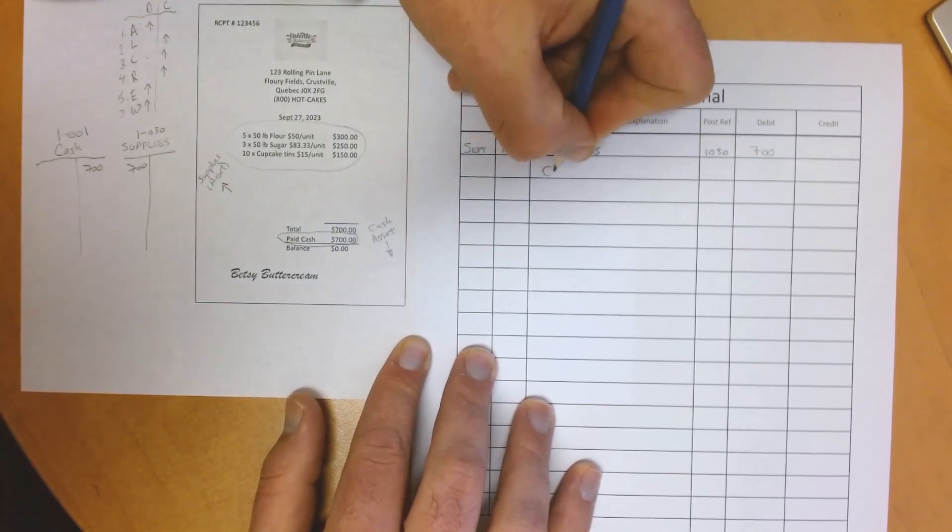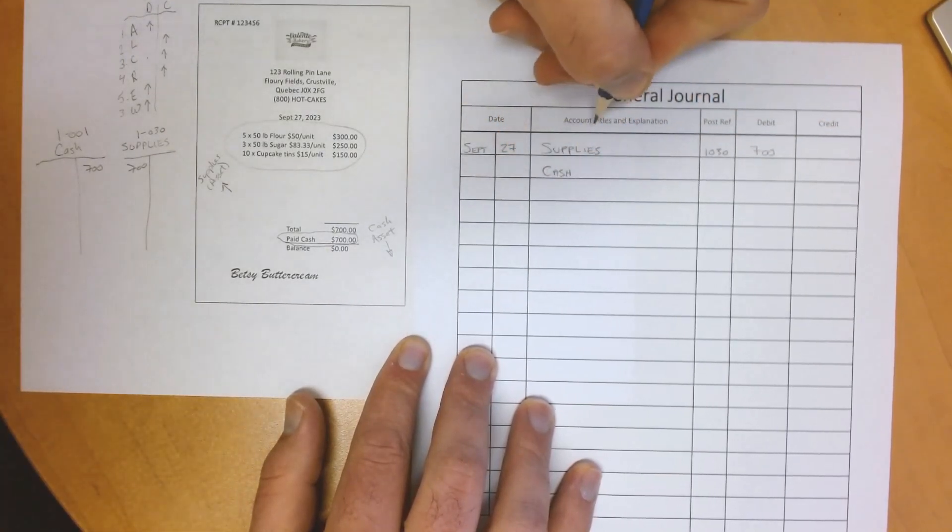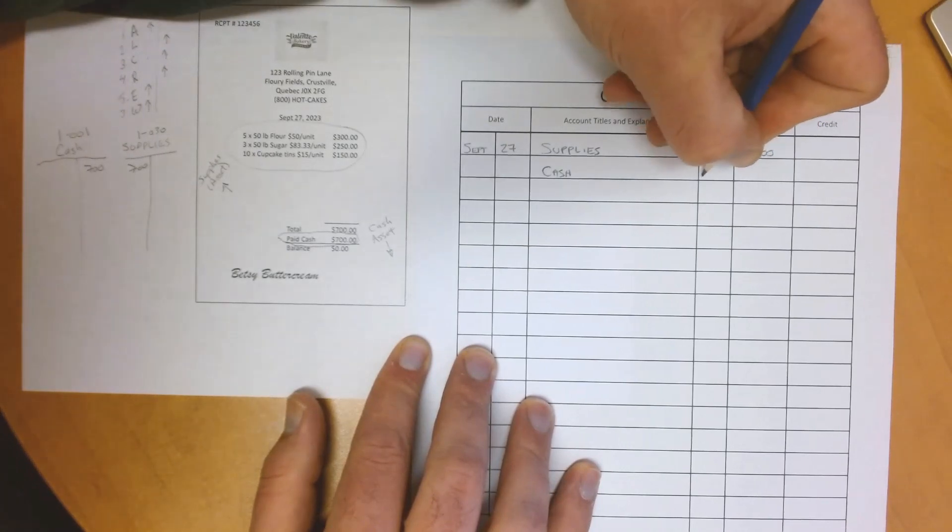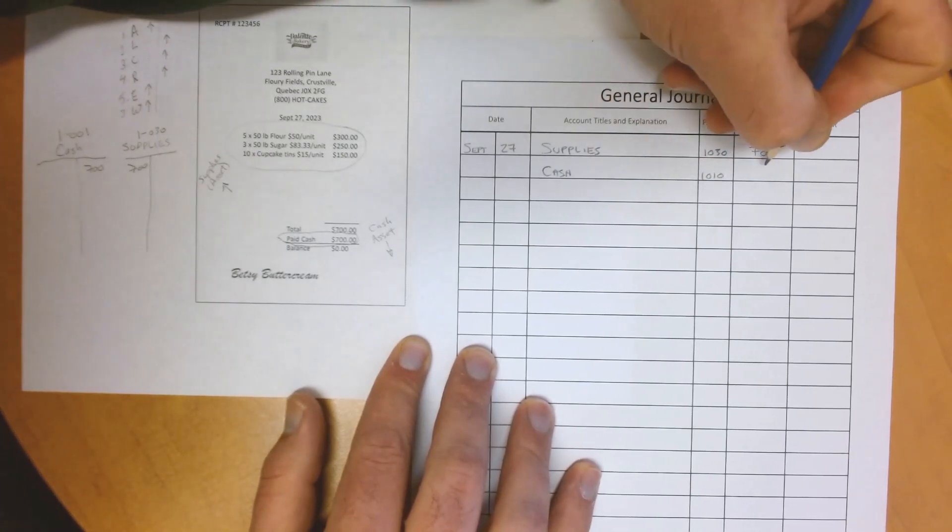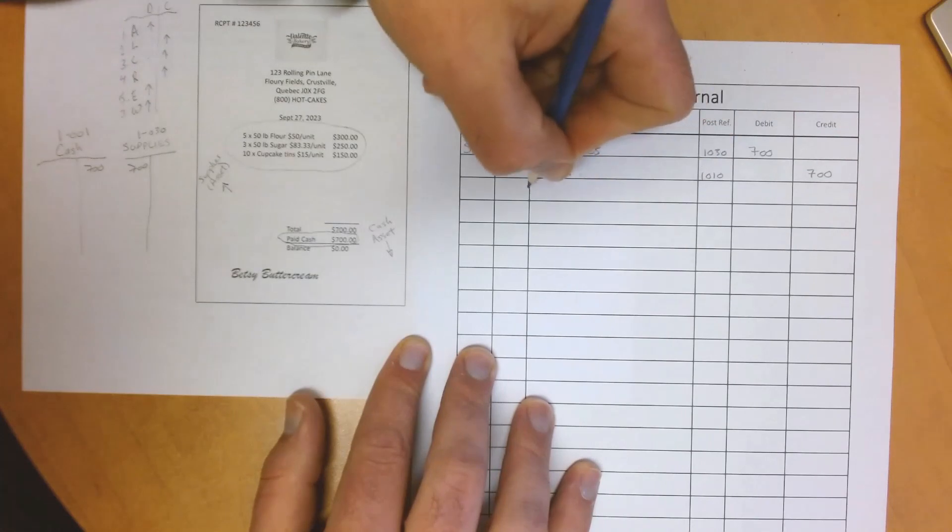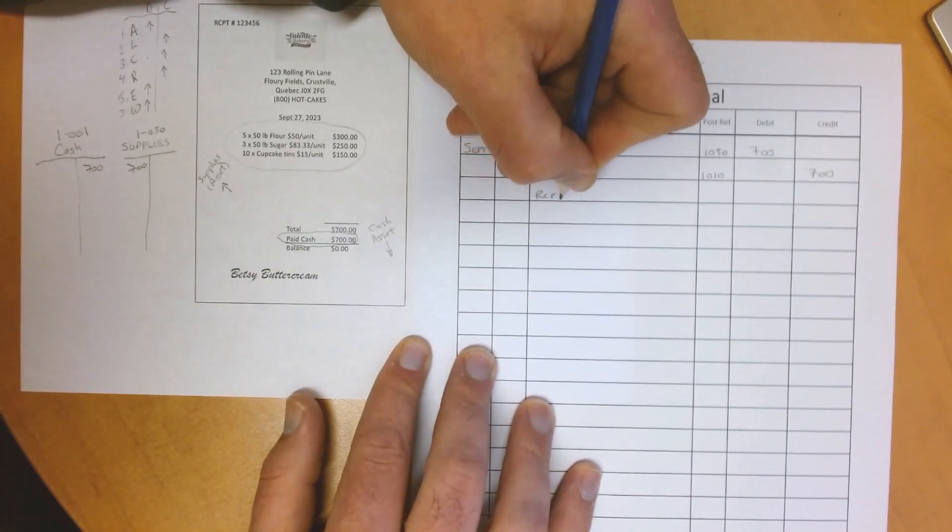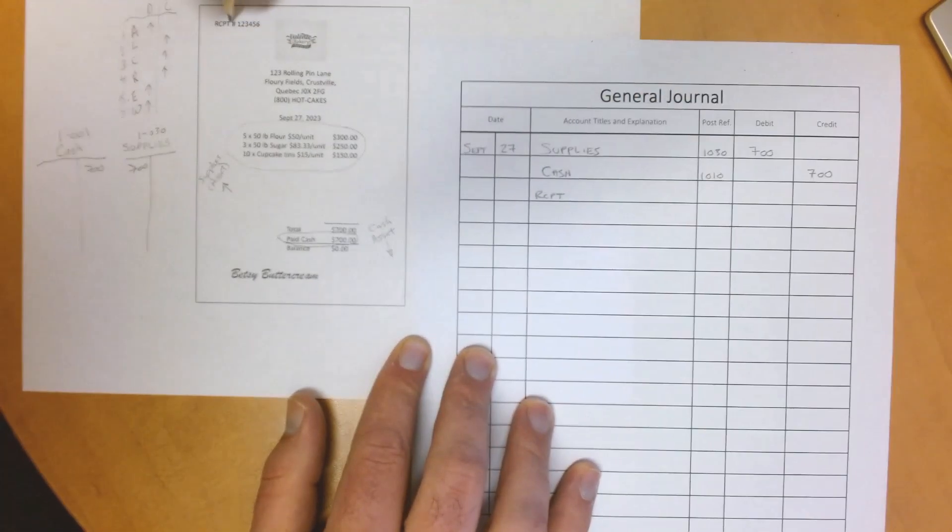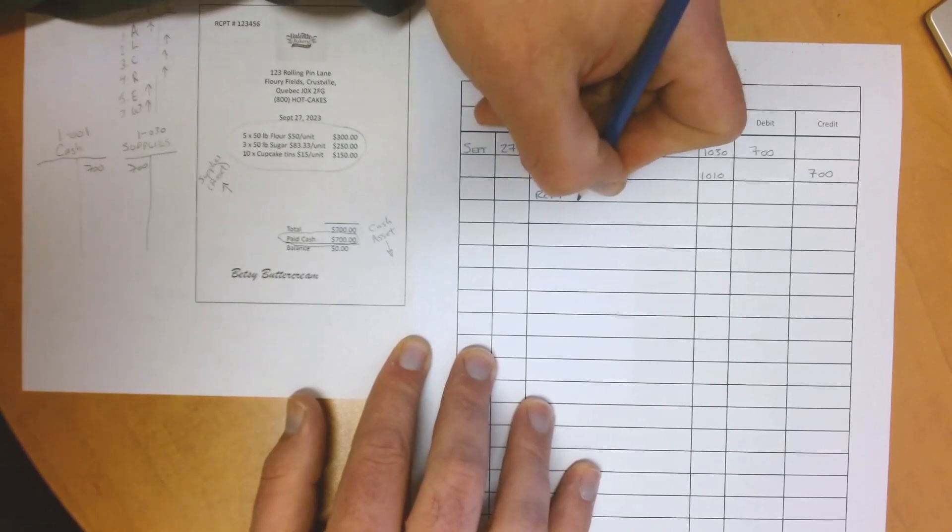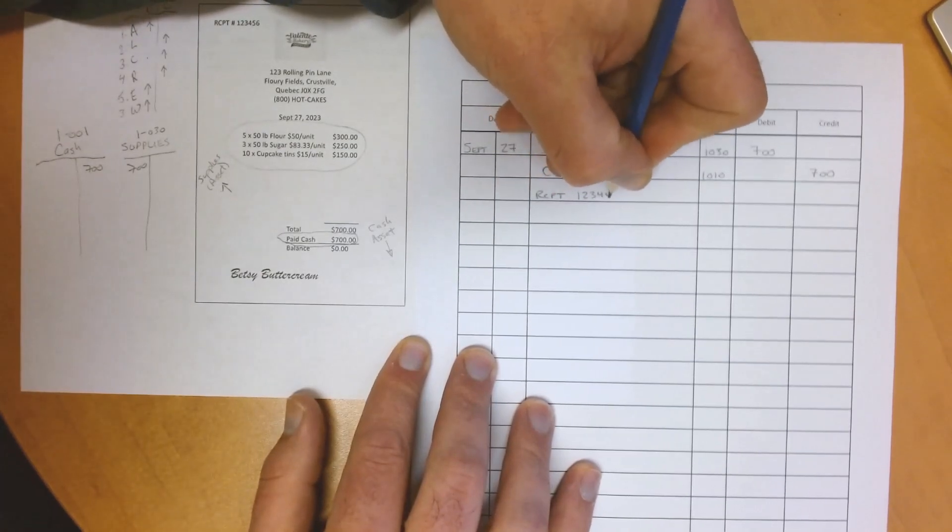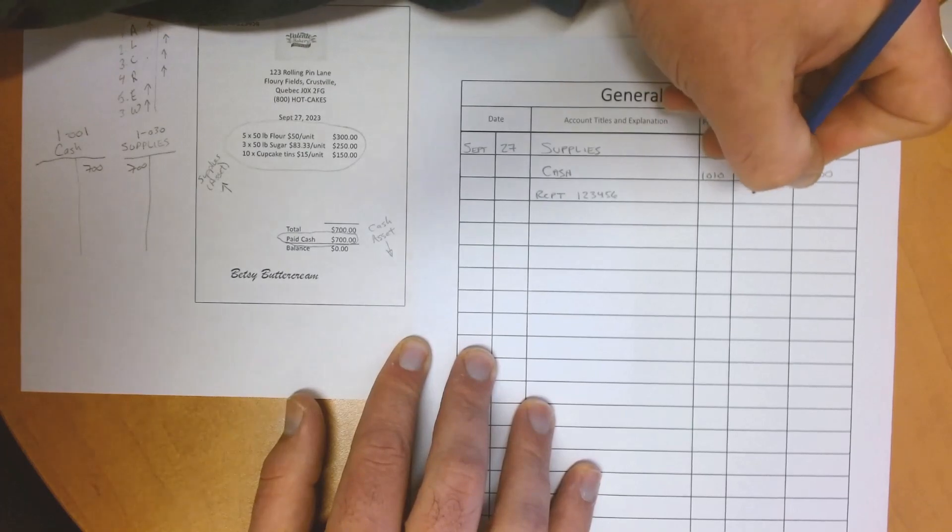And next, our credit, which is a decrease to our bank account. Don't forget to write down the source document reference so that if something is wrong, we can sort it out later. Every entry has to balance on the debit and credit side.